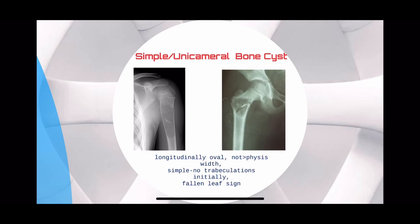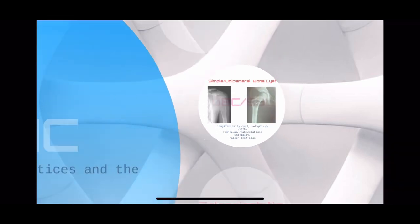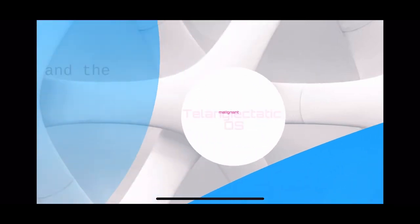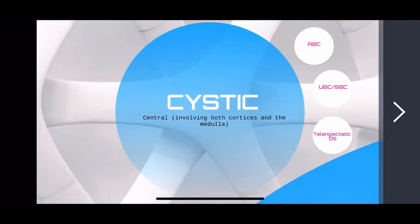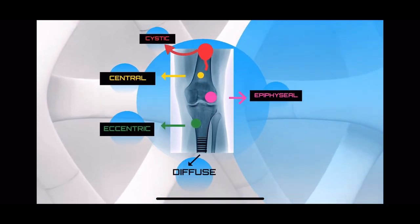The pathognomonic sign is the fallen leaf sign, which means there was a fracture and the fragment traveled all the way down to the base of the cyst — because there was simple fluid, not hemorrhagic fluid as in ABC. For telangiectatic osteosarcoma, we will deal with it in the malignant section, because all the tumors we are discussing now are benign — there are no soft tissue extensions.